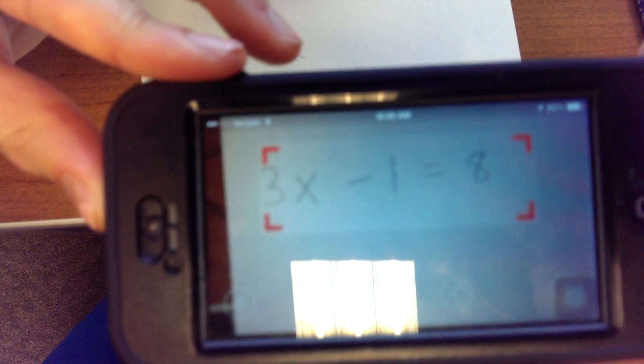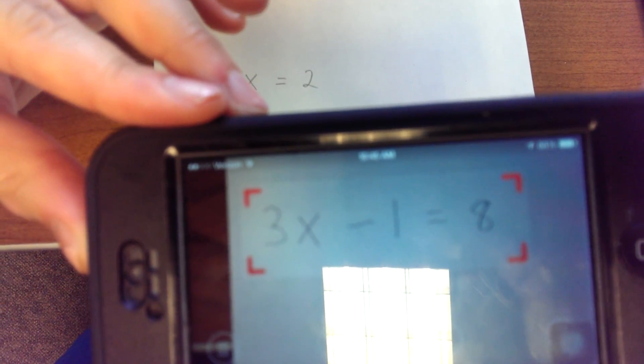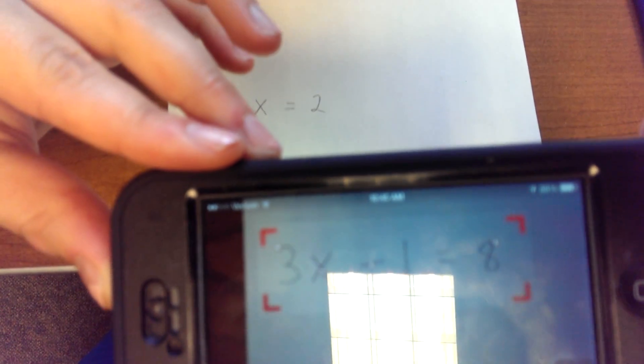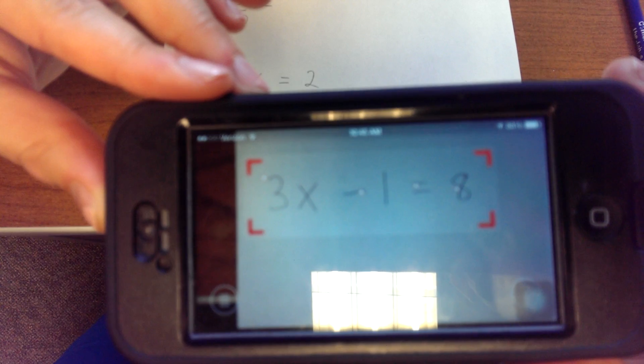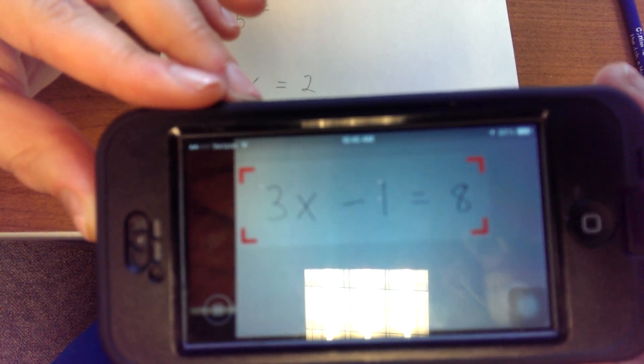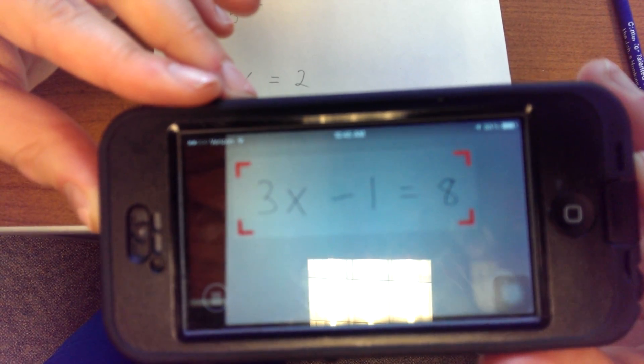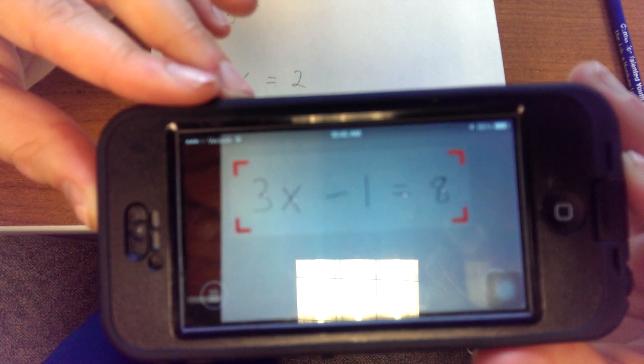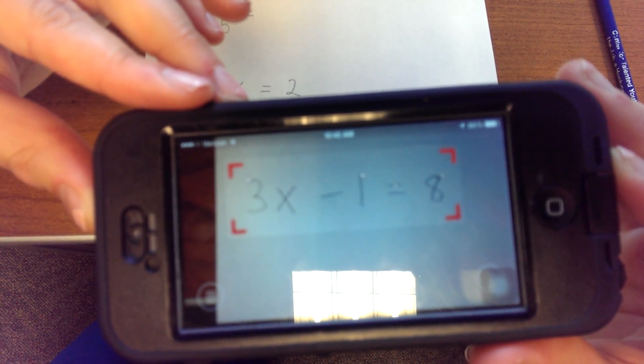I'm gonna lean down so that I have a really steady hand for this last one. 3x minus 1 equals 8. Come on. X equals 3. X equals 3. And nothing.